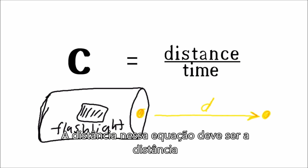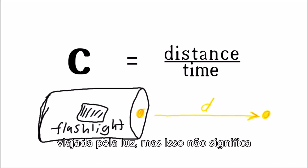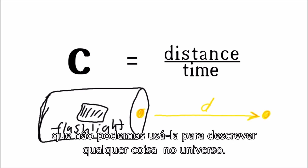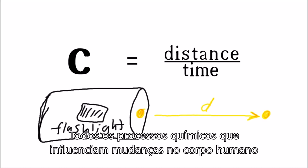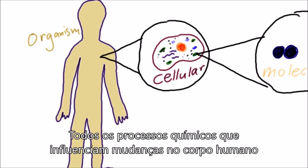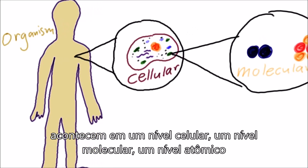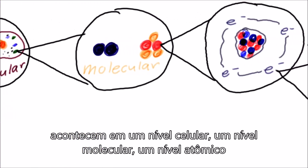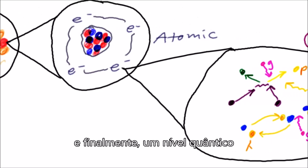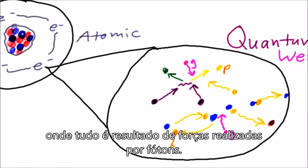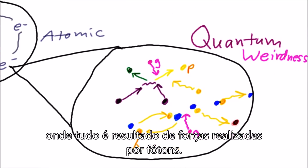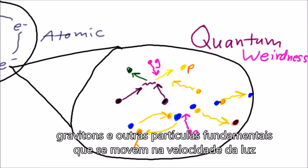The distance in this equation has to be the distance traveled by light, but that doesn't mean we can't use it to describe any matter in the universe. All the chemical processes that cause matter to change and the human body to think, breathe, and age happen on a cellular, molecular, atomic, and ultimately quantum level — where everything is the result of forces carried out by photons, gravitons, and other fundamental particles which move at the speed of light.